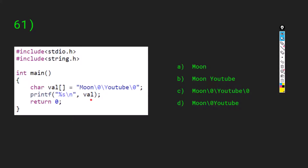We are using printf with %s to print. Strings in C are saved as character arrays. Whenever we write moon followed by backslash 0, the backslash 0 is considered a terminator. When the compiler runs through the code and sees m-o-o-n then backslash 0, it terminates the string. So the answer is A: moon.